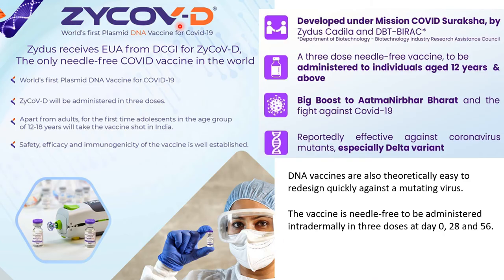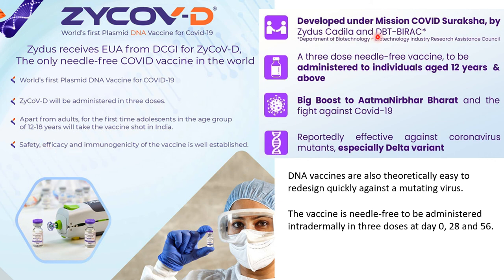ZyCoV-D is the world's first plasmid DNA vaccine given for COVID-19. It has received emergency use approval from the Drug Controller General of India. It is intradermal, needle-free, and painless, administered in three doses: on day zero, four weeks later for the second dose, and eight weeks later for the third dose. A main advantage of this Zydus Cadila vaccine is that it can be injected into people between 12 to 18 years of age. Safety-wise, DNA vaccines are theoretically the most safe vaccines of all, but for this vaccine in particular we need to monitor side effects, and Phase 4 trials will yield better results.